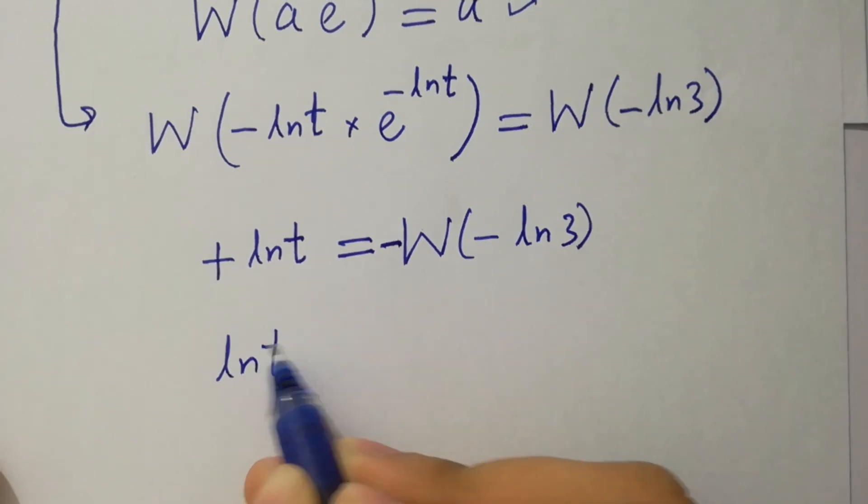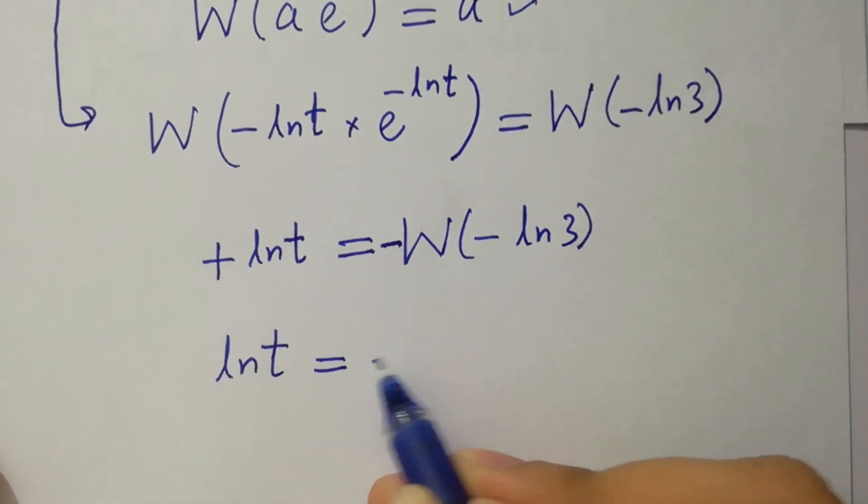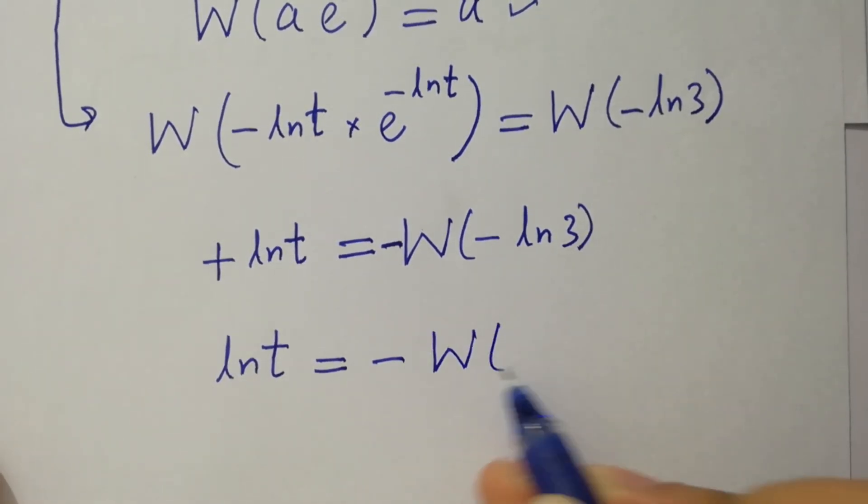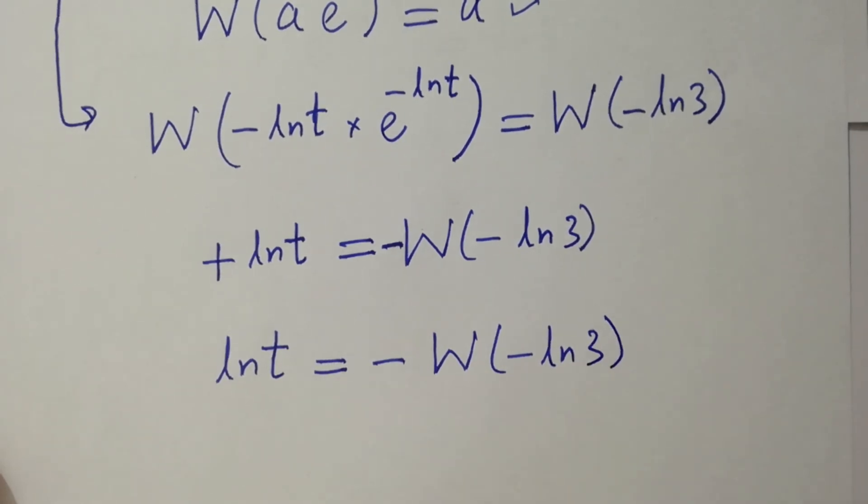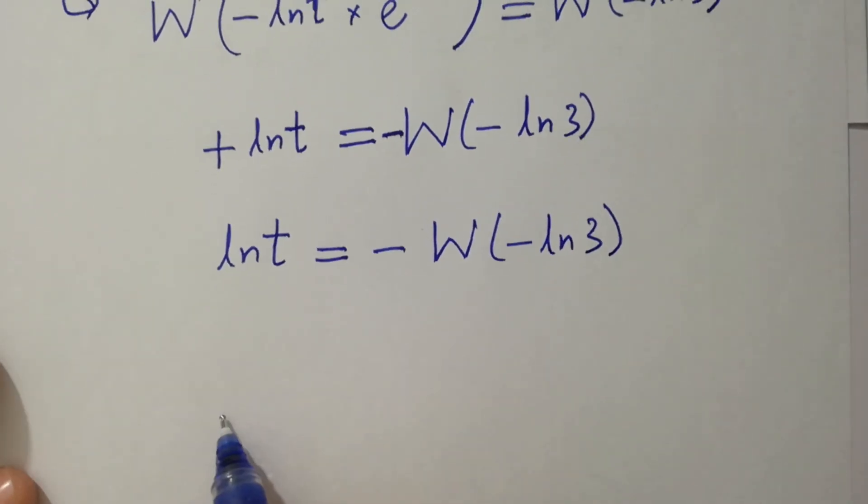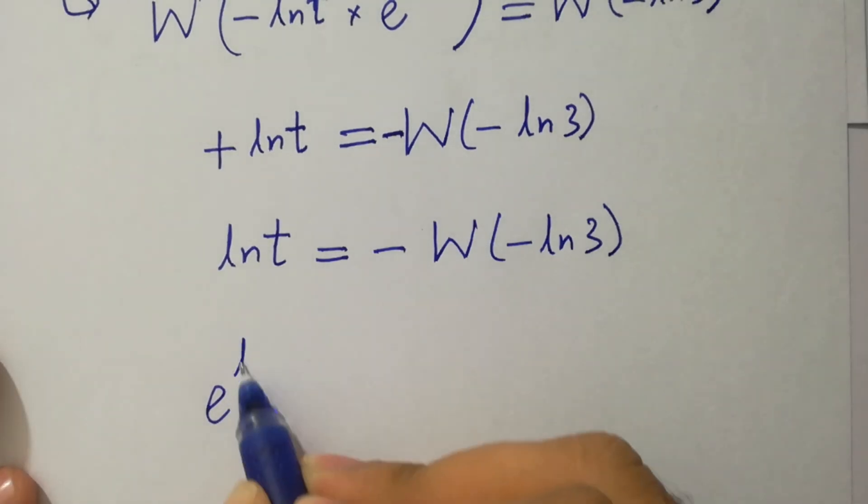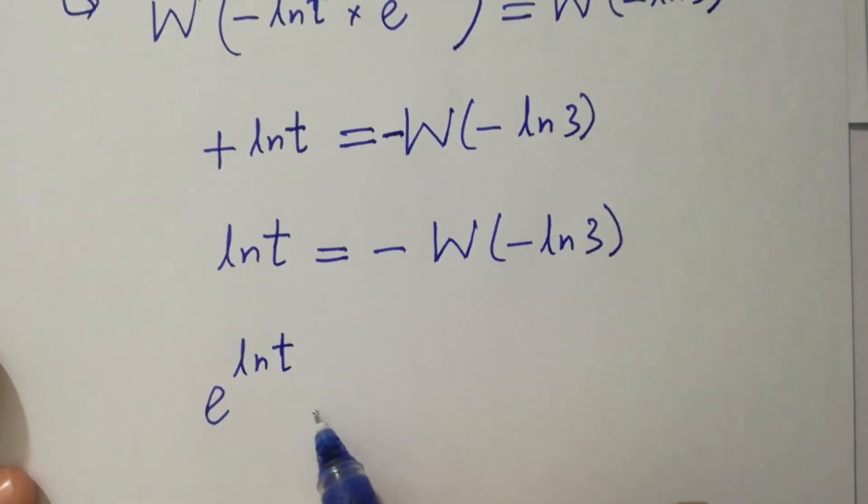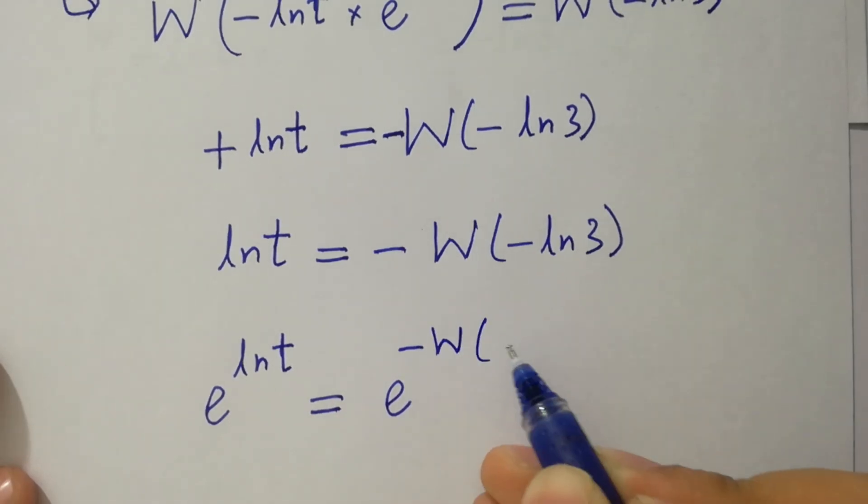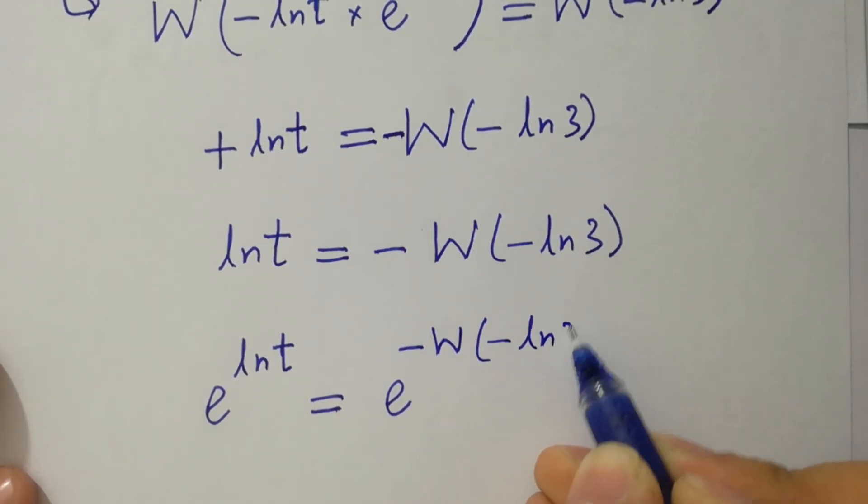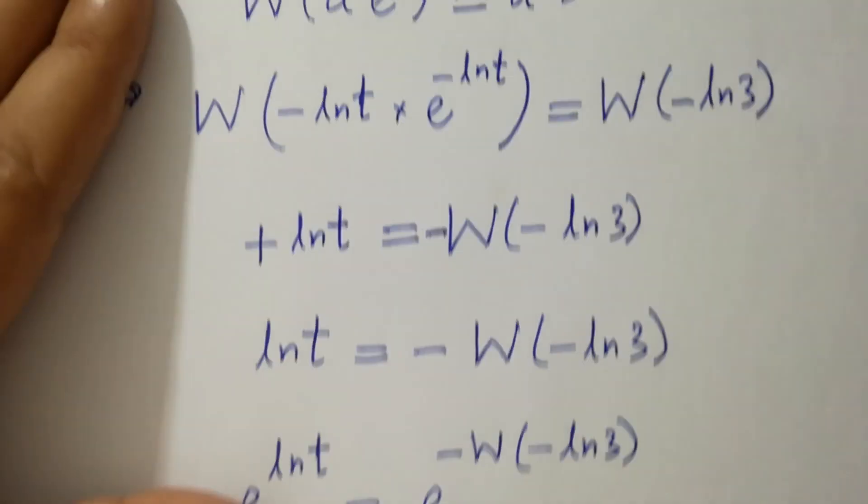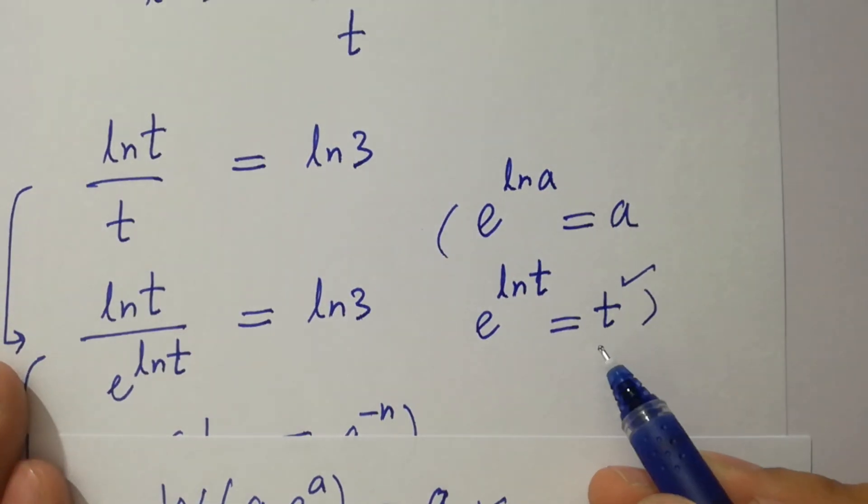To find t here will be minus minus plus and here will be minus. So here we have ln t equal to minus w minus ln 3 raise e on both sides. e to the power ln t equal to e to the power ln t equal to t.